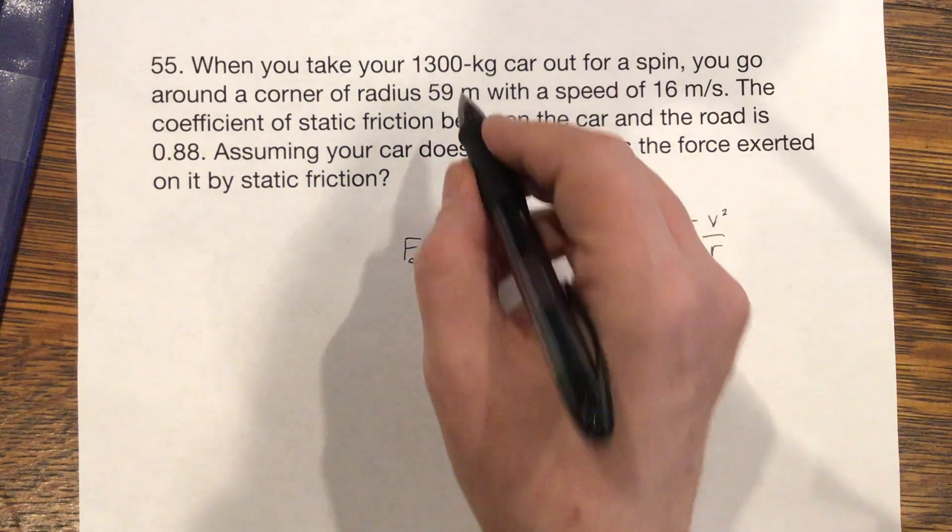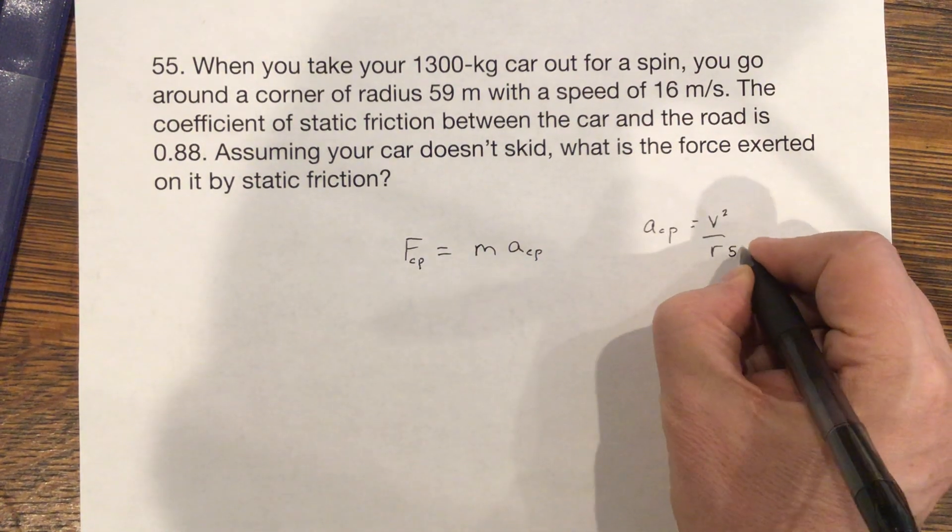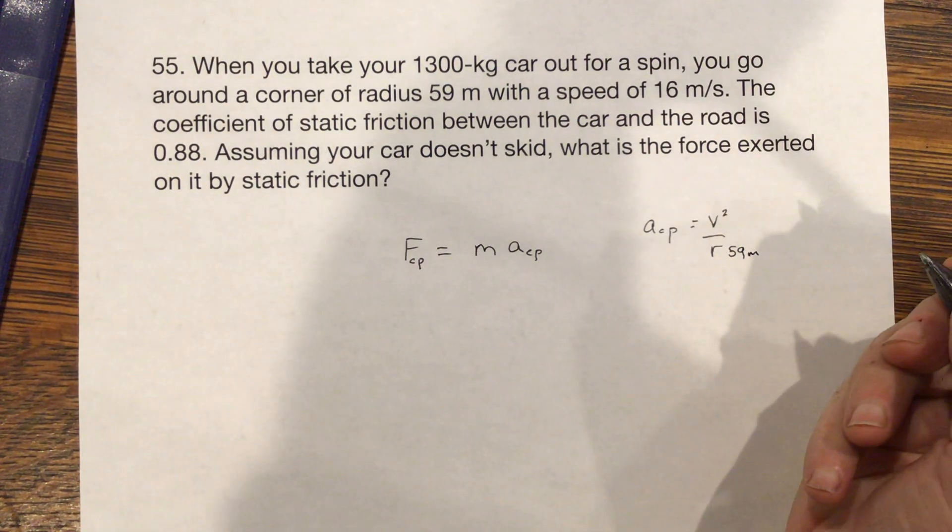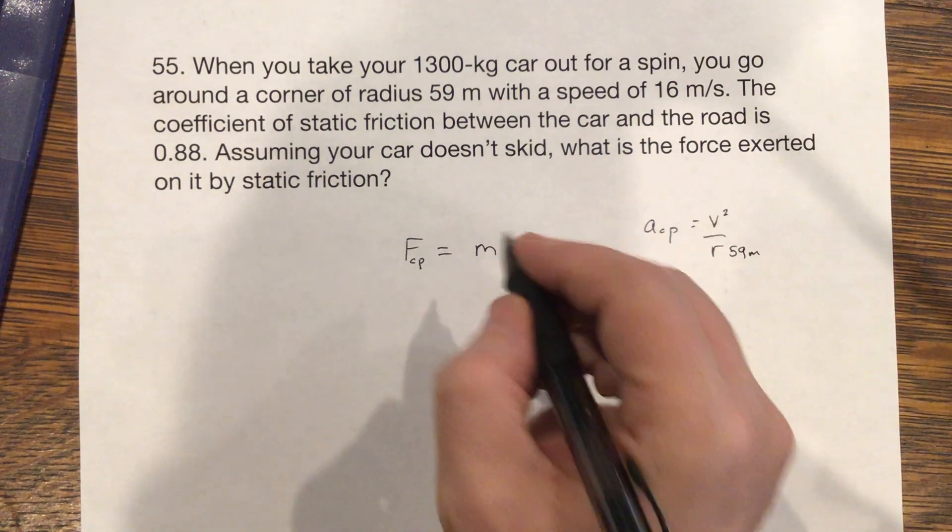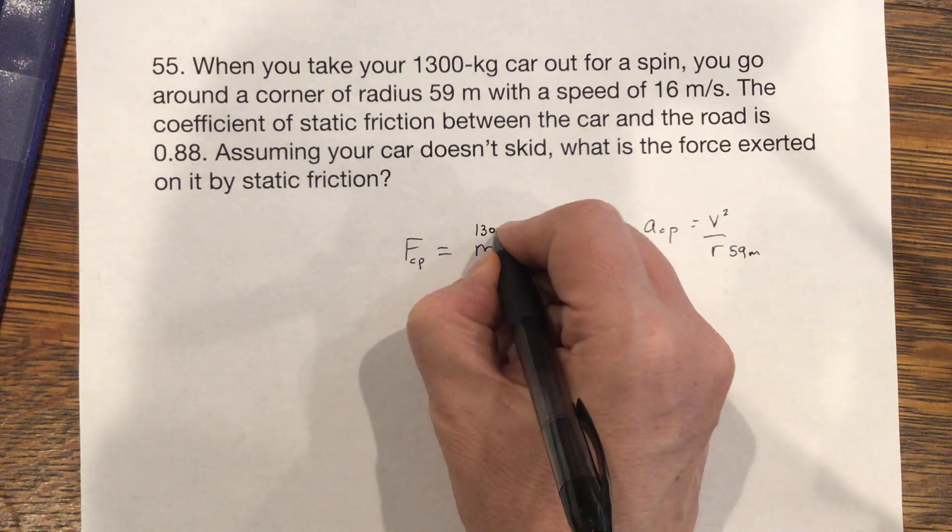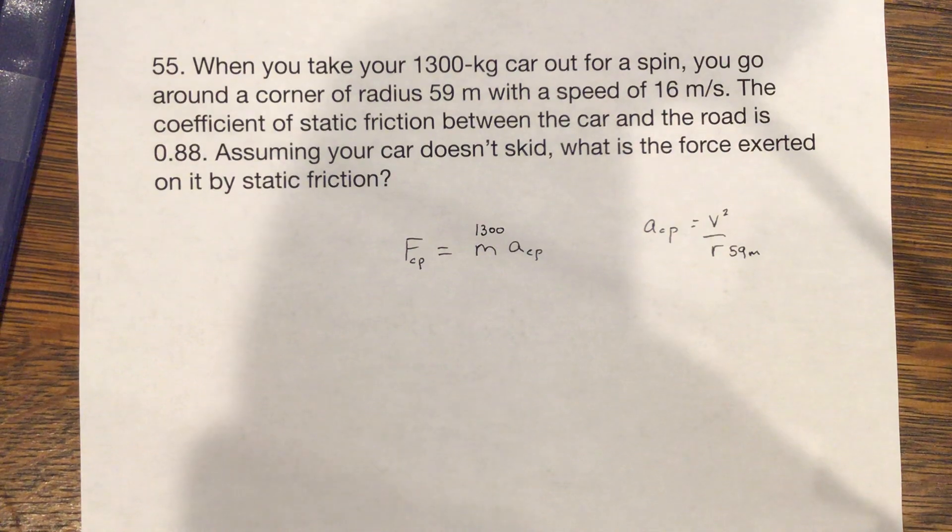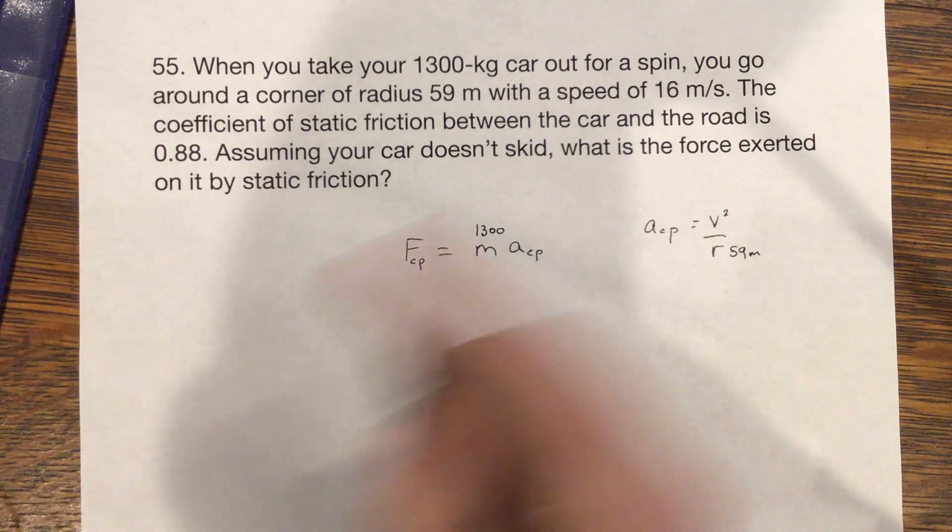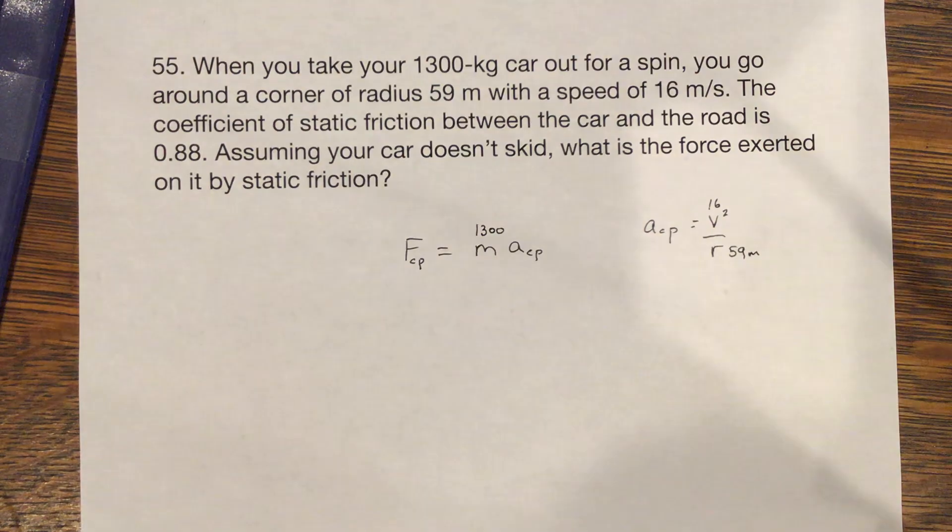So it's going to give us some information. We've got 59 meters here is our radius. We see that the mass of the car is 1300 kilograms, and the velocity of the car is 16 meters per second.